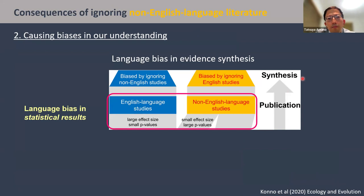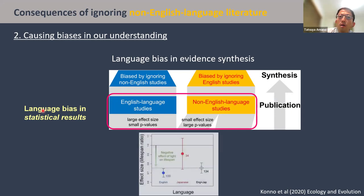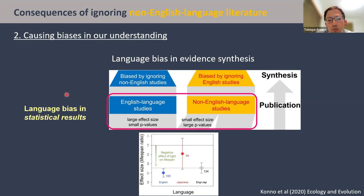Another problem is that ignoring non-English language literature can cause severe biases in our understanding of biodiversity. In healthcare, it has been shown that more statistically significant results are more likely to be published in English. This issue is known as language bias in evidence synthesis — more specifically, language bias in statistical results — meaning that the nature and direction of a study's results can affect what language it is published in. We found language bias in statistical results in biodiversity conservation too. In this paper, we showed that effect size was hugely different between English language studies and Japanese language studies, although all these studies were included in the same meta-analysis. Ignoring non-English language studies would bias the conclusion of meta-analysis.